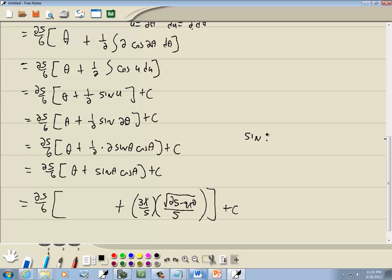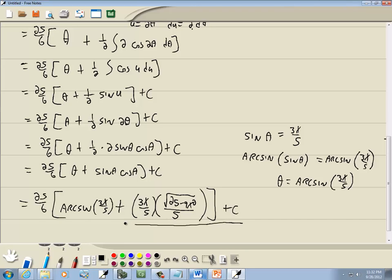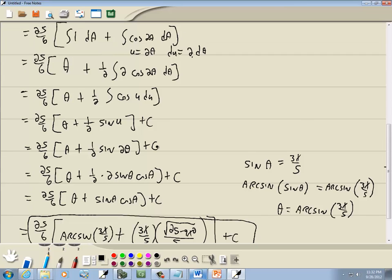Now remember, we said sine theta is equal to 3x over 5. Here we just want theta, so we can take arc sine to both sides. Arc sine and sine will cancel each other out, and we got theta is equal to arc sine of 3x over 5. So this part right here becomes arc sine of 3x over 5. Now you can multiply these together and simplify it a little bit, but that's actually the interesting part. The rest is just a little pre-algebra. Anyway, that's our answer.